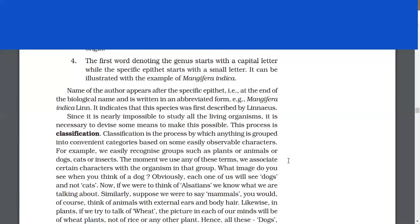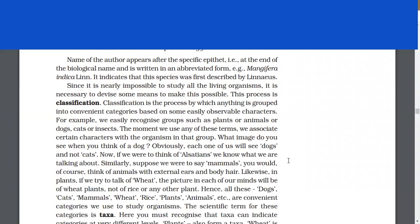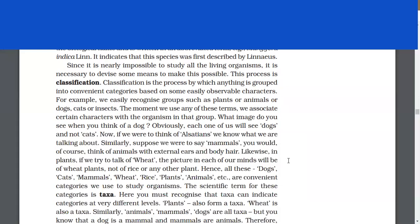Since it is nearly impossible to study all living organisms, it is necessary to devise some means to make this possible. This process is classification. Classification is the process by which anything is grouped into convenient categories based on easily observable characters. For example, we easily recognize groups such as plants or animals, dogs, cats, or insects. The moment we use any of these terms, we associate certain characters with the organism in that group.